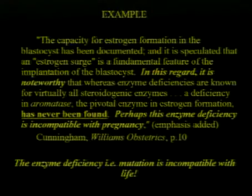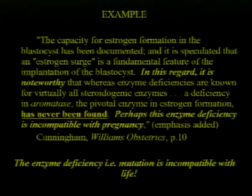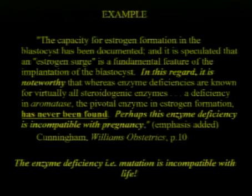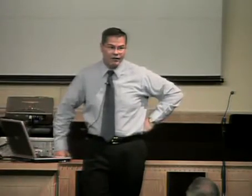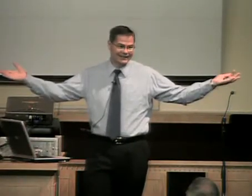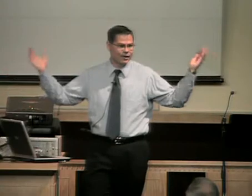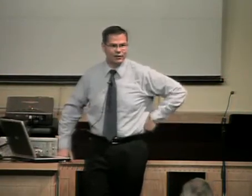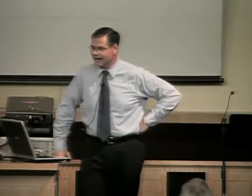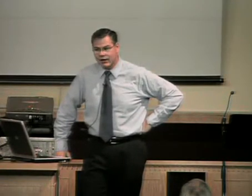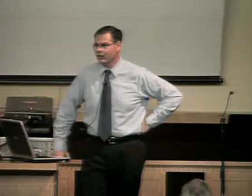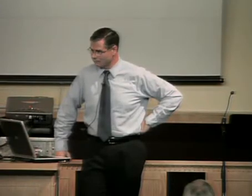So the question to evolutionists is: how many times of trial and error through random genetic mutations did it take to get this enzyme aromatase to evolve? Because if it doesn't evolve, there's no pregnancy. It's a showstopper right then and there for evolution. You need that enzyme, and there's no chance to evolve through trial and error over and over again.